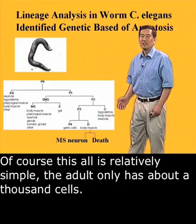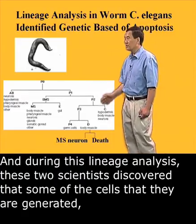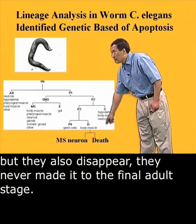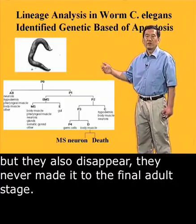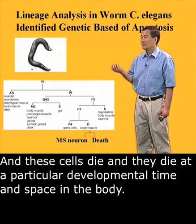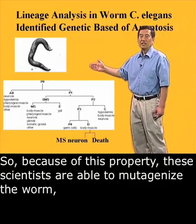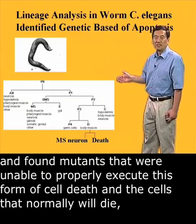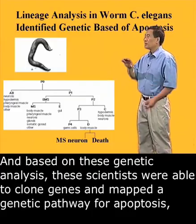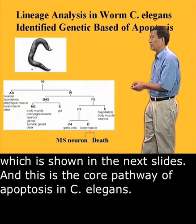This organism is relatively simple — in the adult it only has about 1,000 cells. During this lineage analysis, these two scientists discovered that some cells are generated but also disappear — they never make it to the final adult stage. These cells die at a particular developmental time and position in the body. Because of this property, the scientists were able to mutagenize the worm and find mutants unable to properly execute this form of cell death, where cells that normally die during development now live. Based on this genetic analysis, they were able to clone the genes and map a genetic pathway for apoptosis.